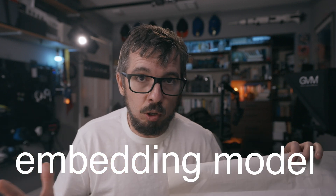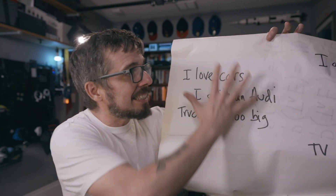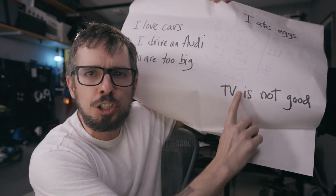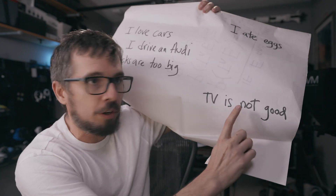We use a model that we call an embedding model and process all of these sentences in our database — all of the documents — to map them to a specific location, such that every sentence with the same meaning is located close to each other, and sentences that are just different are far, far away.